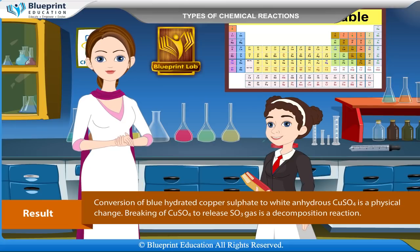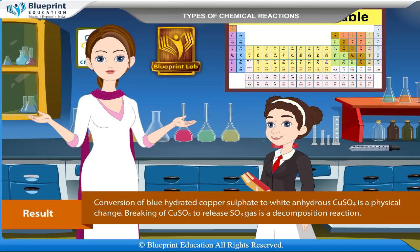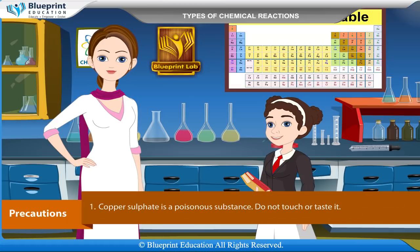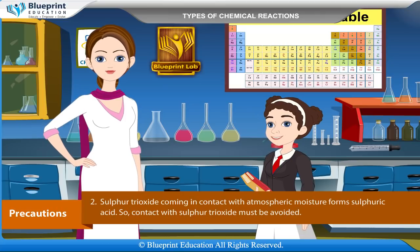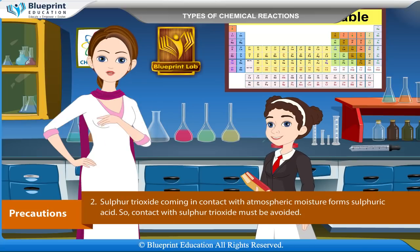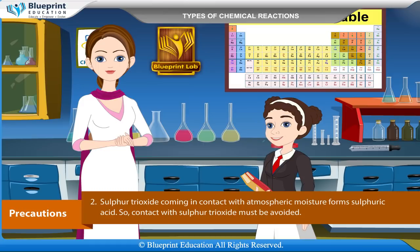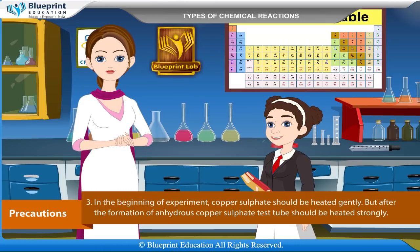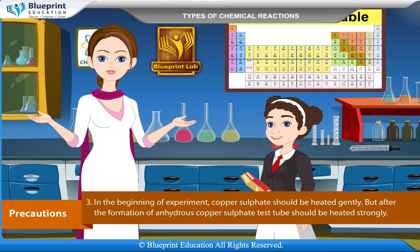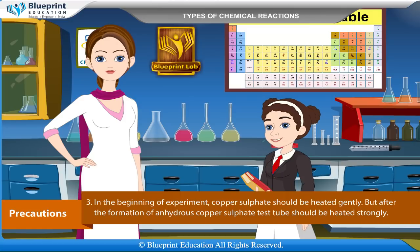Result: Hydrated copper sulphate loses water of crystallisation on gentle heating and becomes dirty white. On further strong heating it decomposes to black copper oxide and sulphur trioxide gas is evolved. Conversion of blue hydrated copper sulphate to white anhydrous copper sulphate is a physical change; breaking down of copper sulphate to release sulphur trioxide is a decomposition reaction. Precautions: Copper sulphate is poisonous — do not touch or taste it. Sulphur trioxide forms sulphuric acid on contact with atmospheric moisture, so avoid contact. Initially heat gently; after formation of anhydrous copper sulphate, heat strongly.